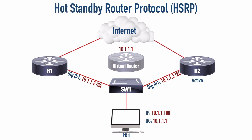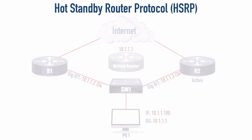Now let's review some of the characteristics of HSRP. First of all, it's a Cisco proprietary first-hop redundancy protocol, meaning that if you're in a mixed vendor environment, you might not want to go with HSRP. But if you're an all-Cisco shop, HSRP might be your first-hop redundancy protocol of choice. It is defined by RFC 2281, and the terminology for the two routers are the active and standby routers.